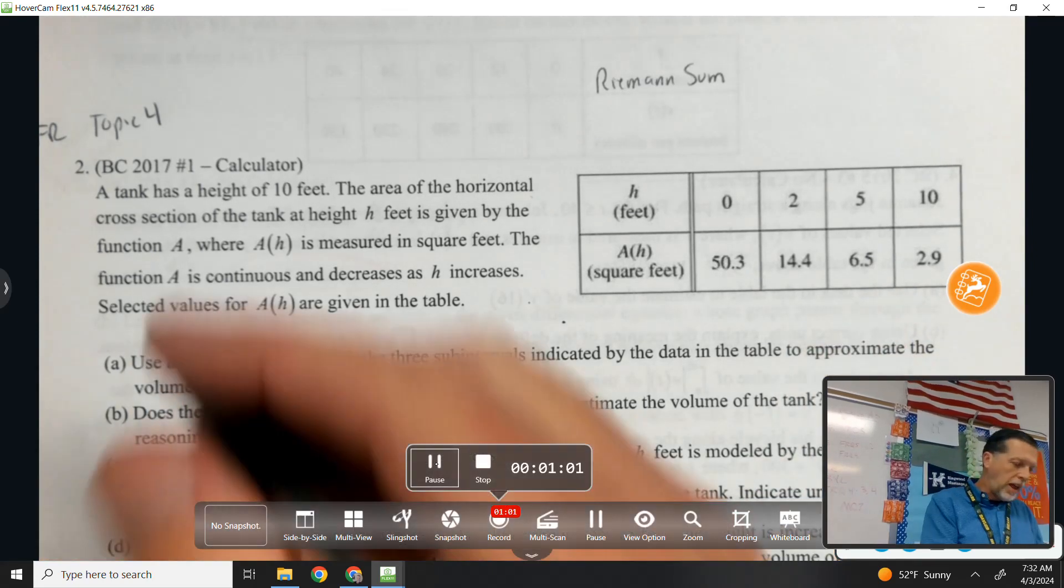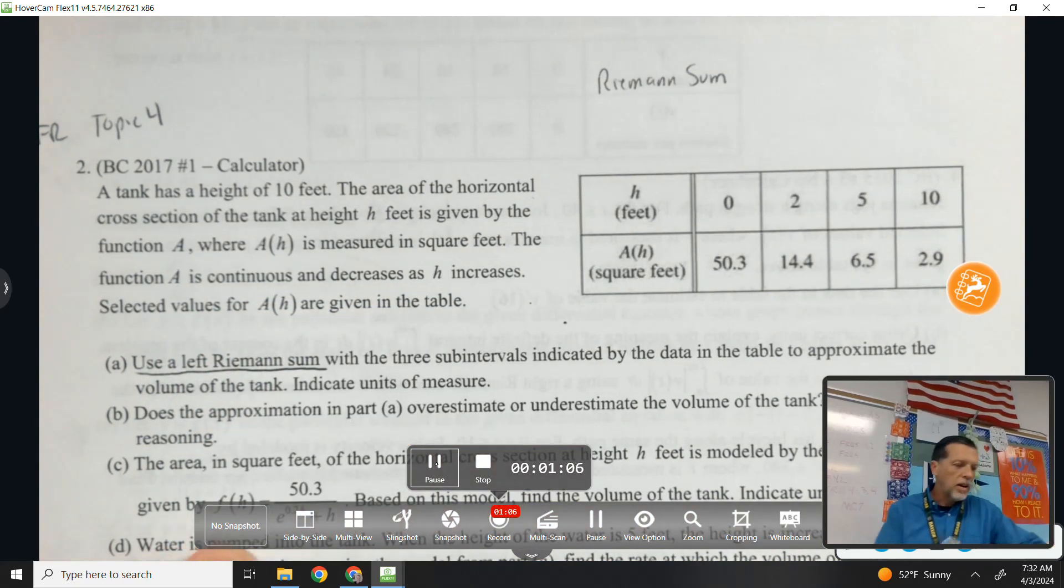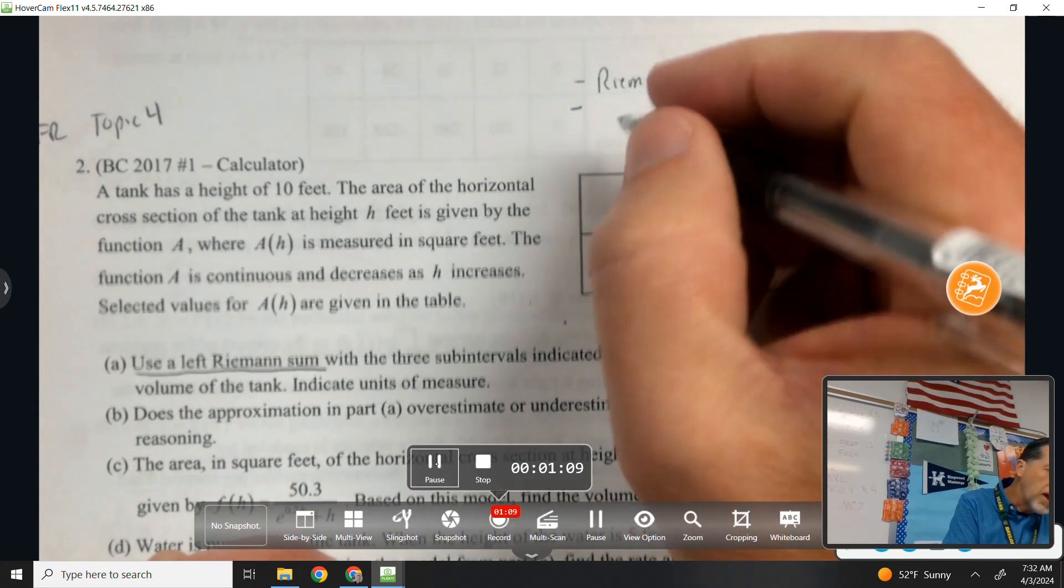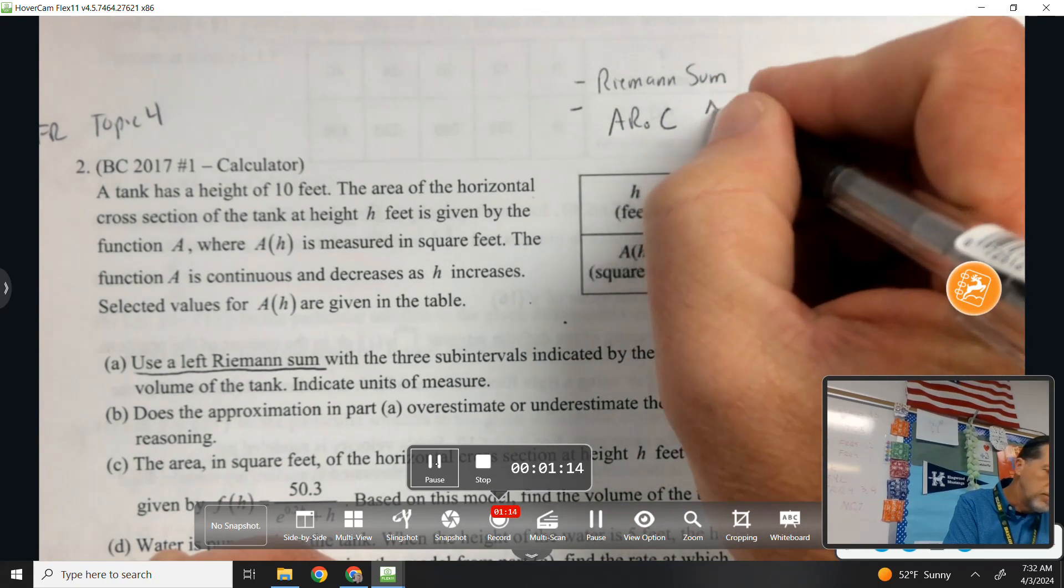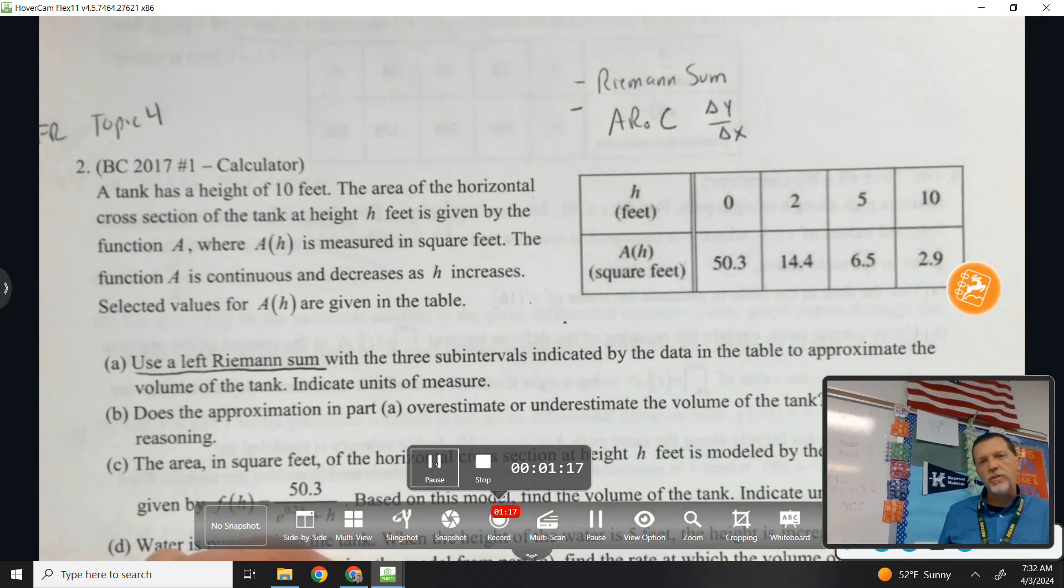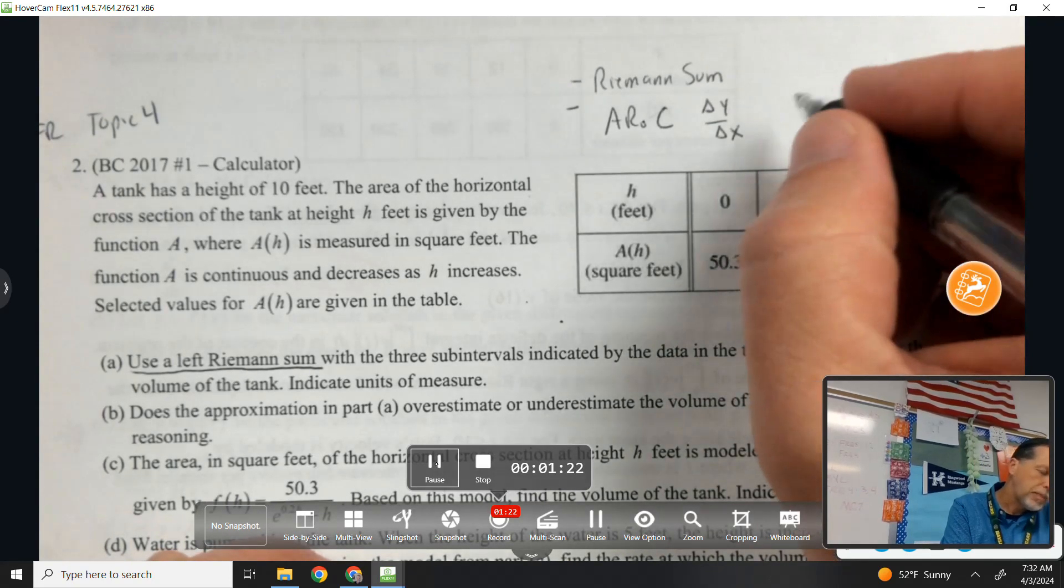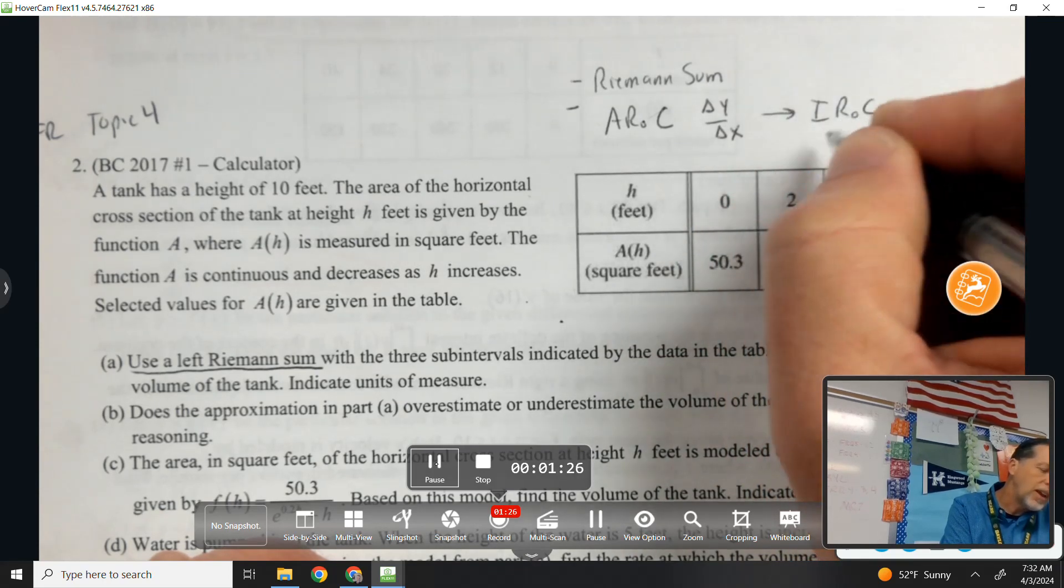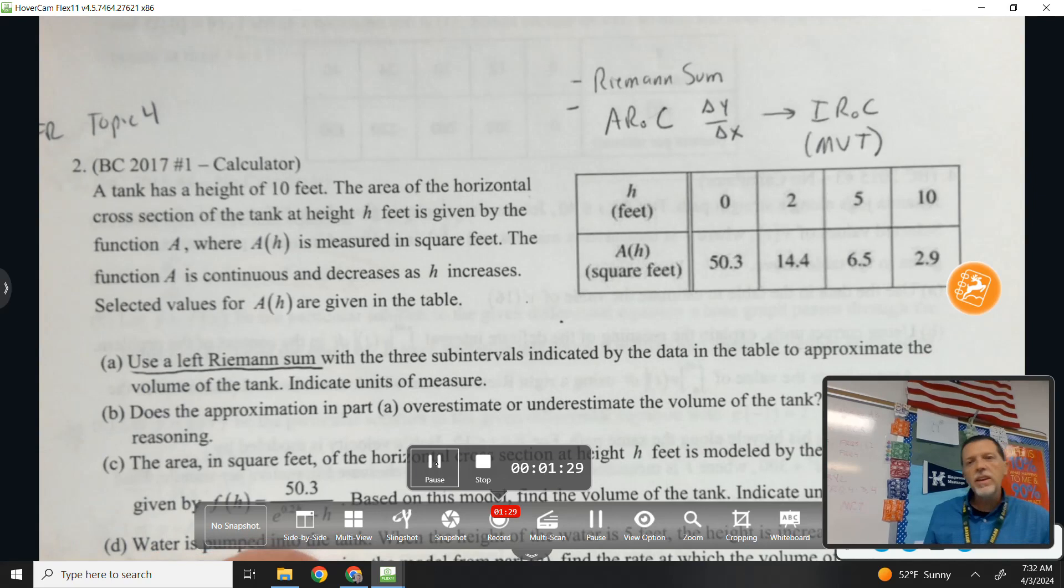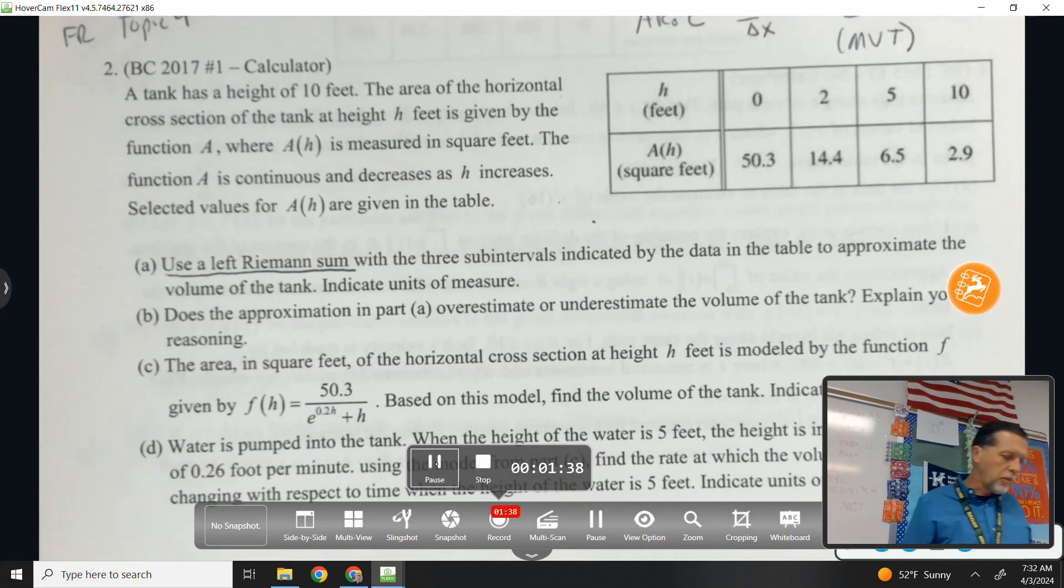In fact, part A, I don't even know what this problem is, but it says use a left Riemann sum. Sometimes they'll do average rate of change because you can't do a derivative, you can't do an instantaneous rate of change, but you can do an average rate of change, like estimate a derivative. And then sometimes that leads to an instantaneous rate of change, MVT. So those are the things I'm thinking about when I see a table.